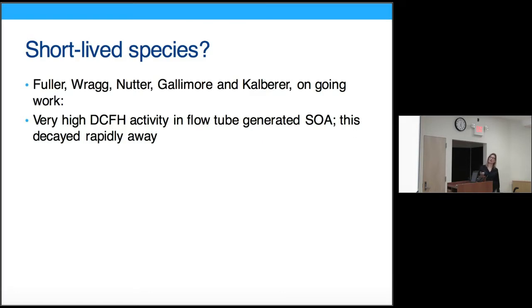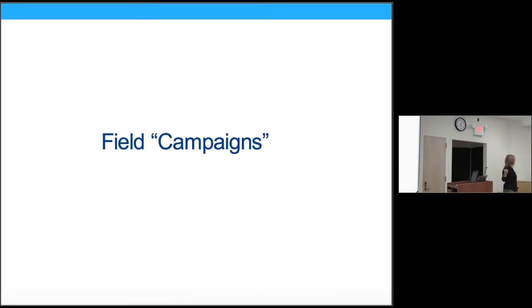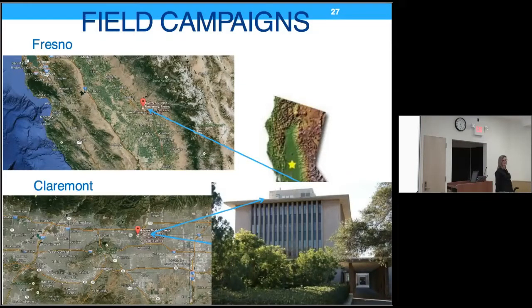On prompt ROS: earlier work from our group showed that hydrogen peroxide and OH in particles as inhaled is relatively low compared to what they generate once captured. At the University of Cambridge, where I was on sabbatical, researchers used the dichlorofluorescein assay to show that when secondary organic aerosol is generated in a flow tube in the lab, there is quite high activity initially that rapidly decays away within a few minutes. Activity also decays slowly over hours to months. Many studies in the literature have used particles that were frozen or stored for years.